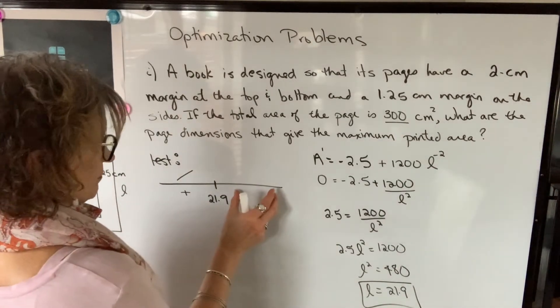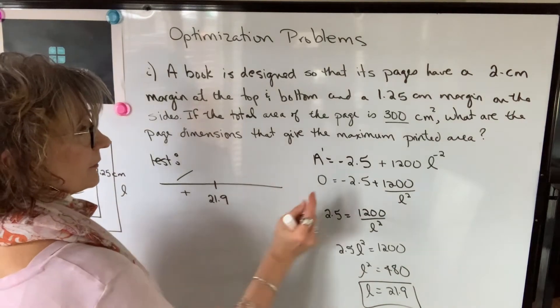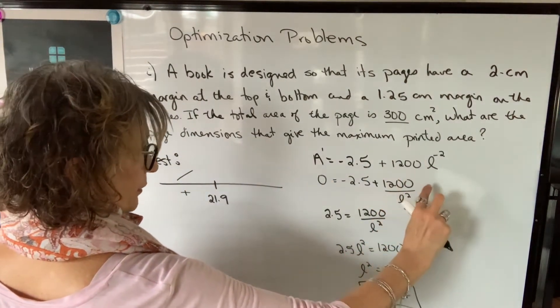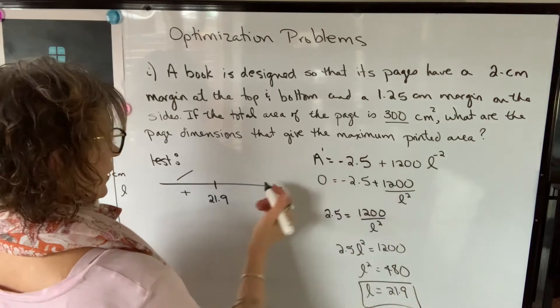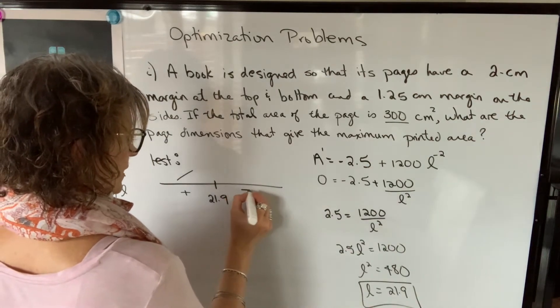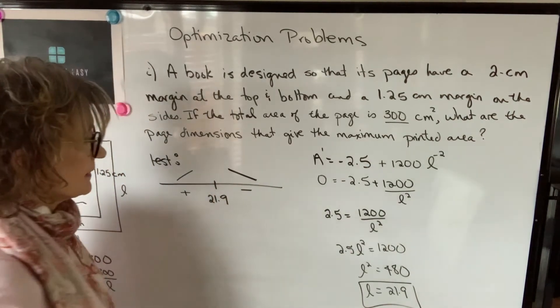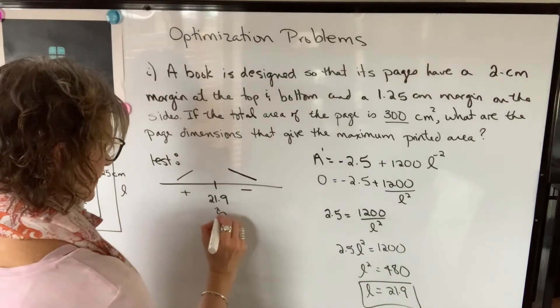And let's pick 25. If I take 1200, divide by 25 squared, and add a negative 2.5, that value is going to be negative. So the function is decreasing. So we do know that this is a maximum.